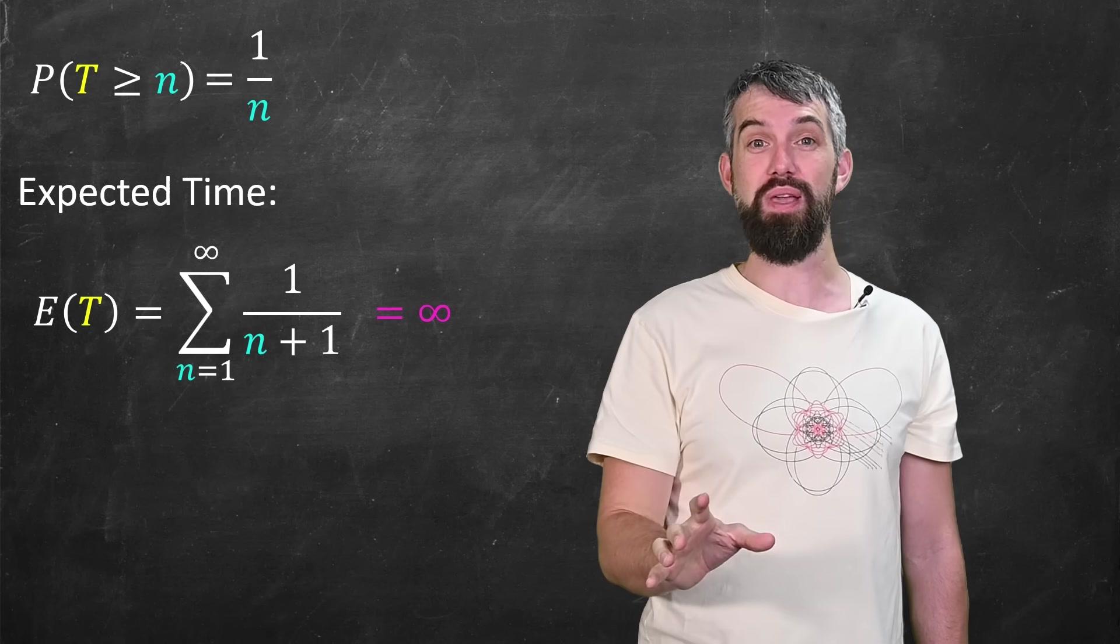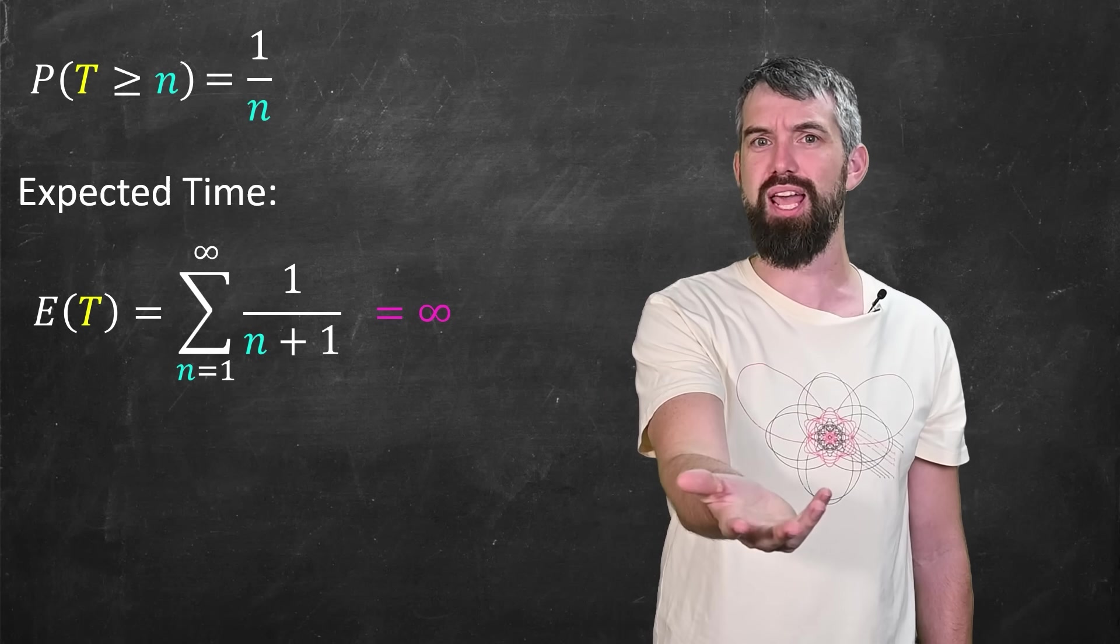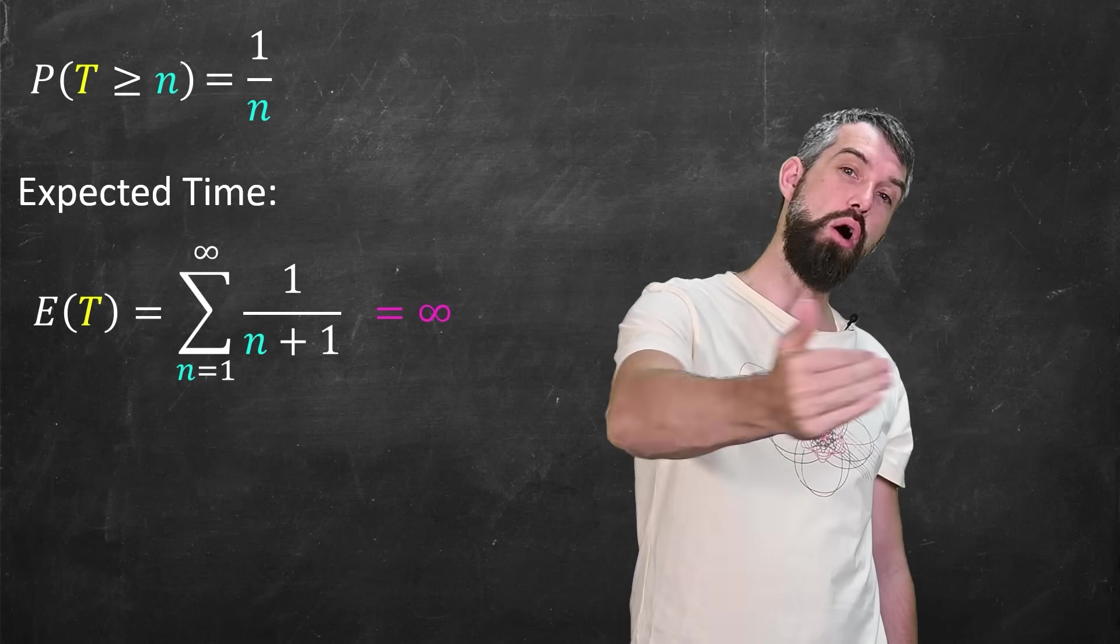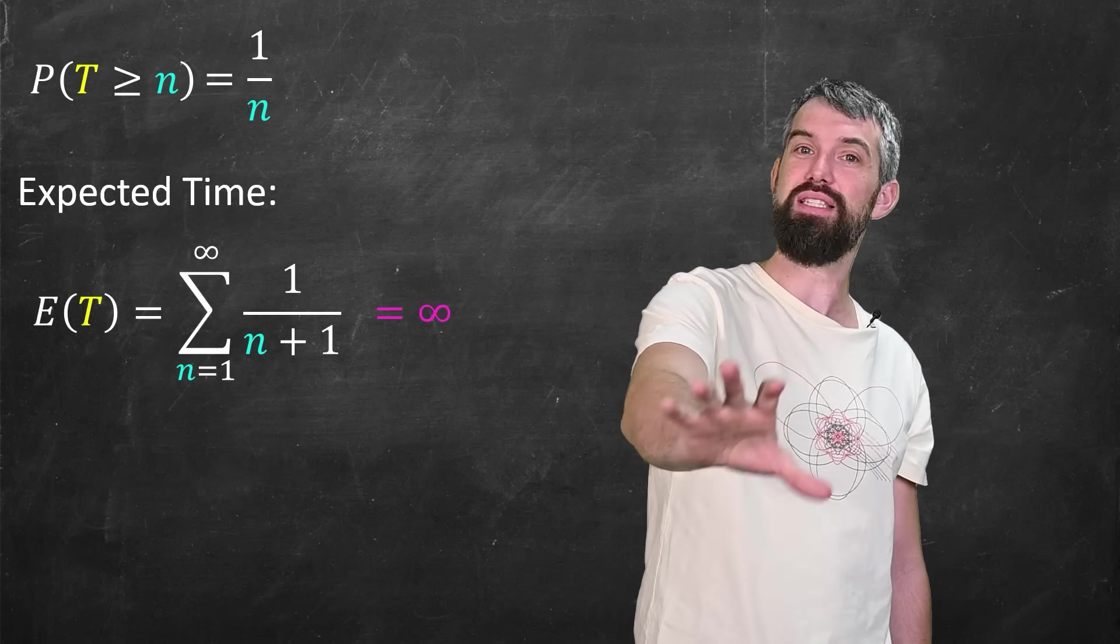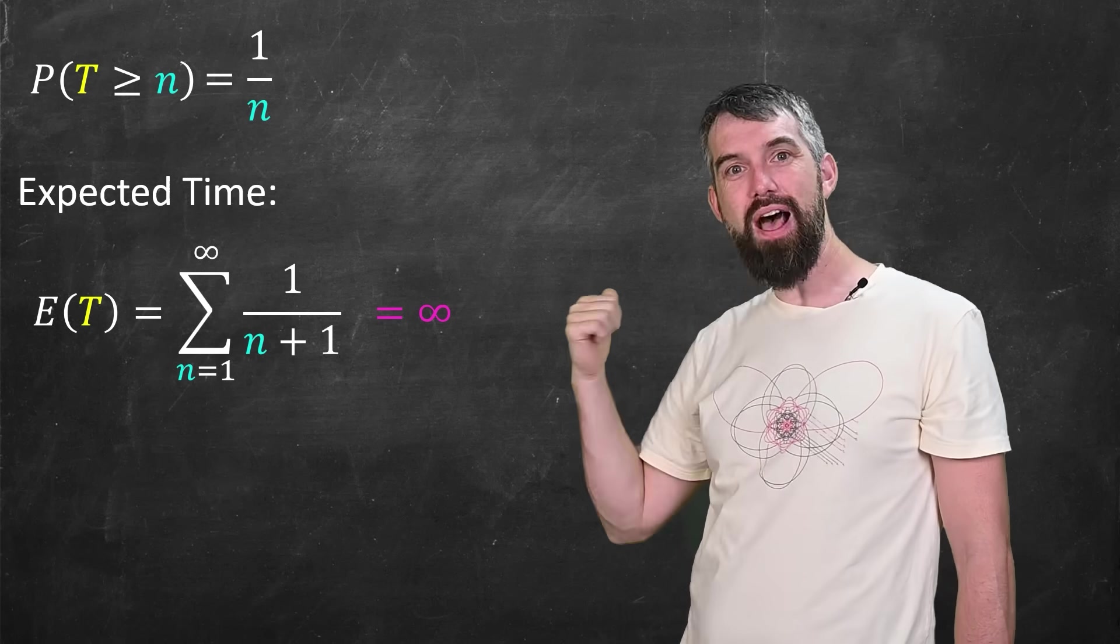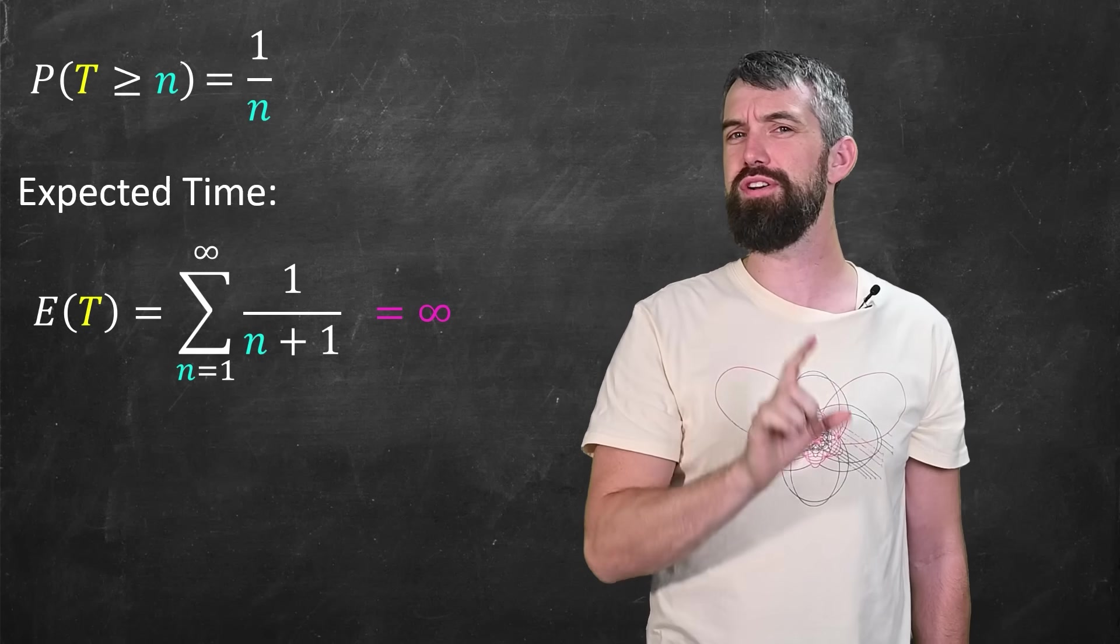And that's really bizarre because at the beginning it would sound like 50-50. It seems like it was quite likely you were going to get a red ball. But because it's so painful when you get a long string of whites, it delays how long you're going to take until you get a red. This expected value turns out to diverge to infinity. But it gets weirder still.